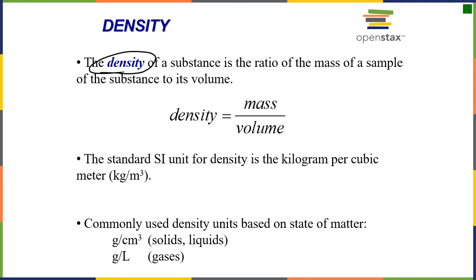Density is a ratio of mass over volume. This is mass, and this is volume. In the lab, we're going to use units of grams per centimeter cubed for solids and liquids, and we're going to use grams per liter for gases just because their density is so low.